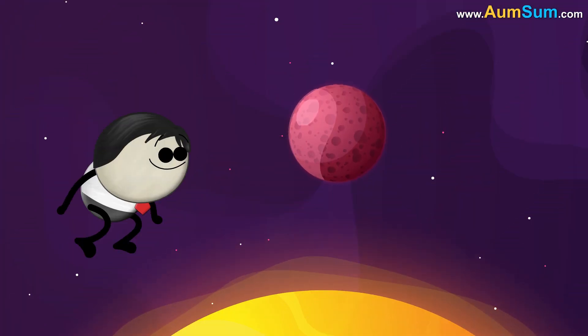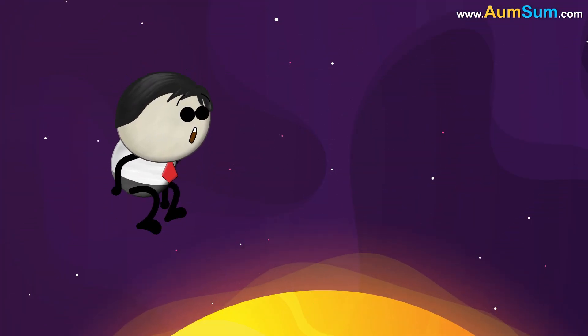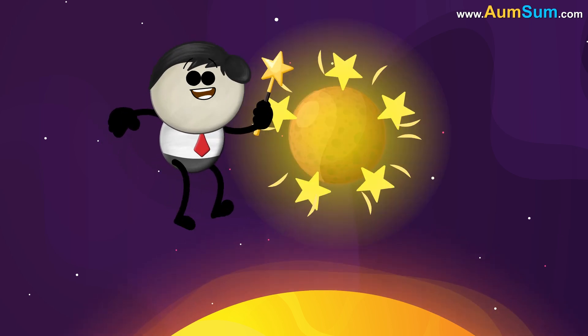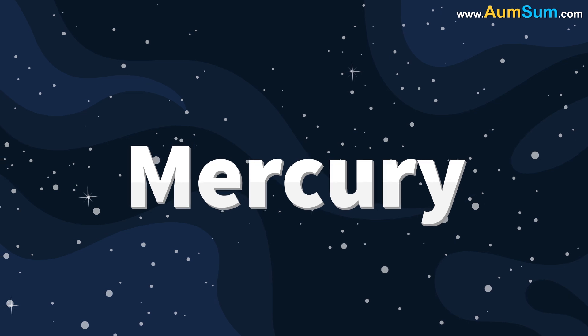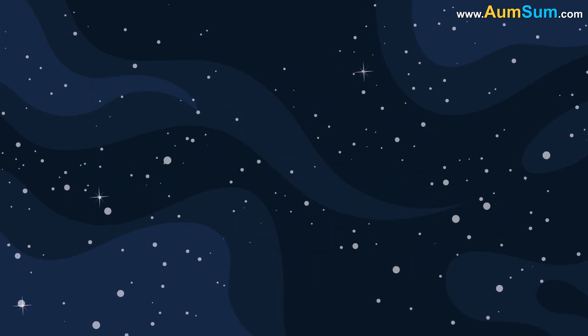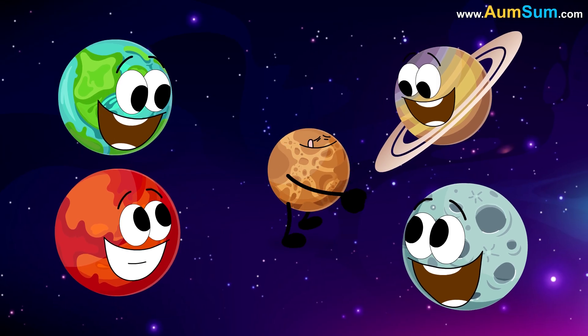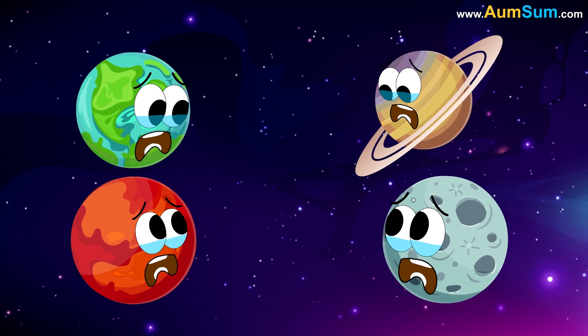What if Mercury disappeared? Simple. Use magic to make it reappear. Oh I'm sorry. Firstly, if Mercury disappeared, the smallest planet in our solar system would be missed by the other planets.